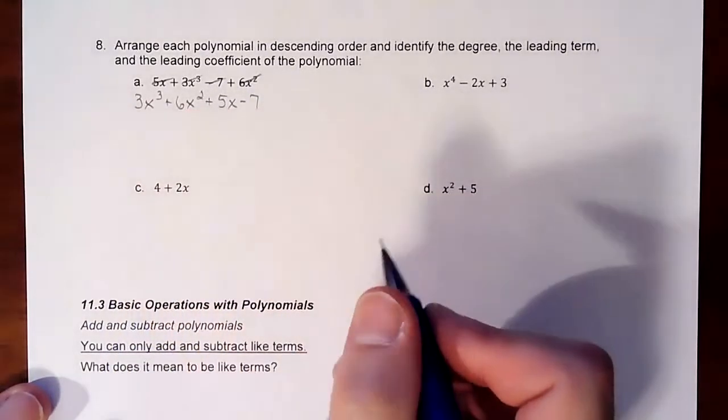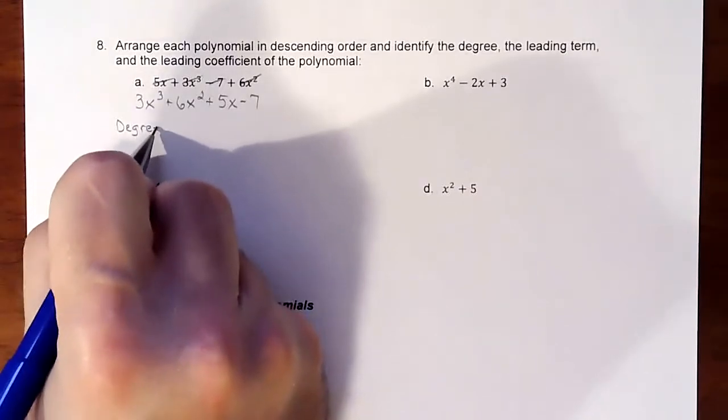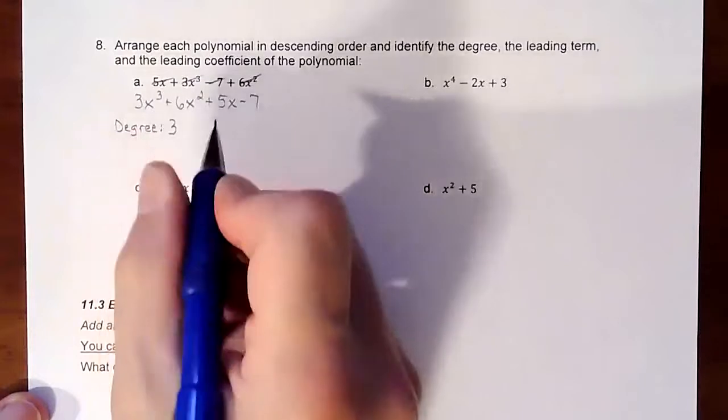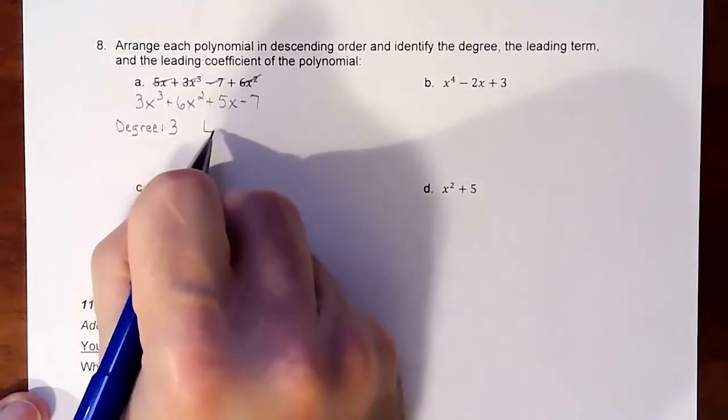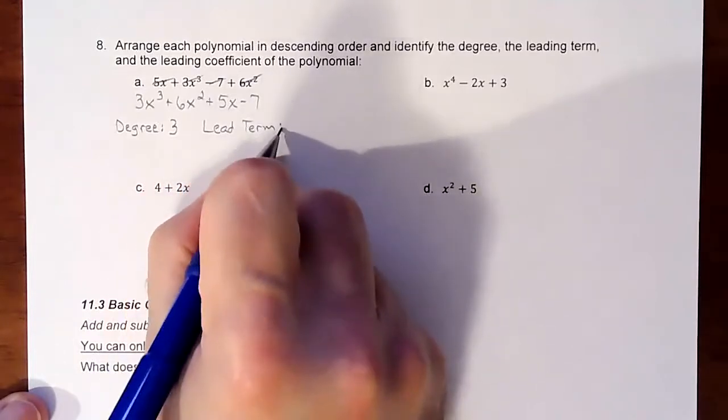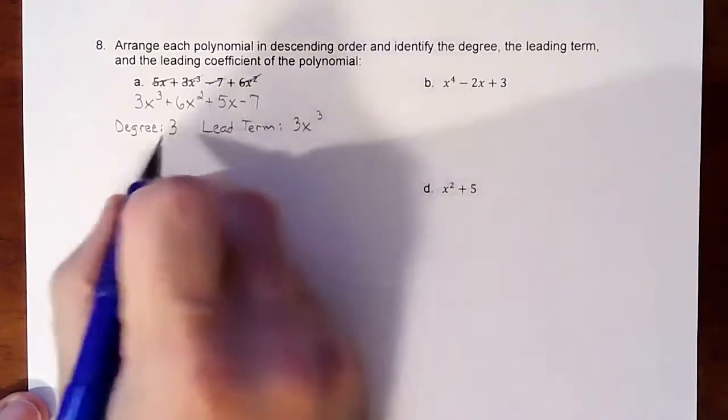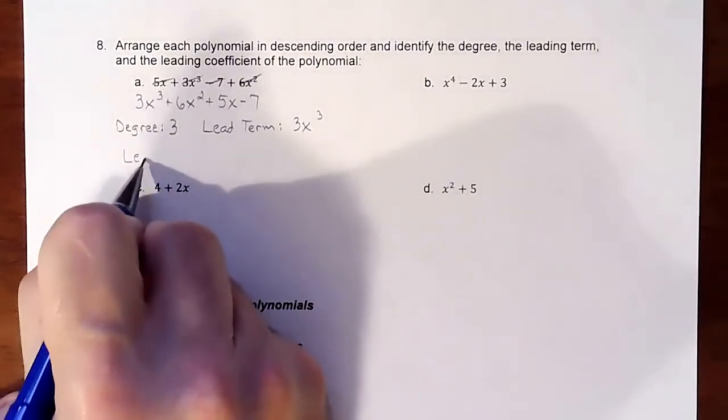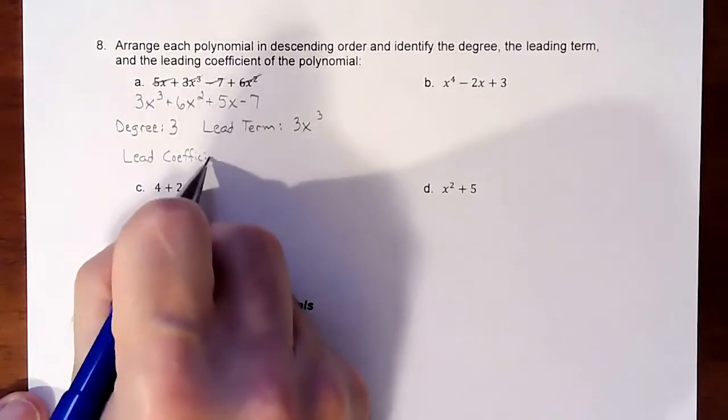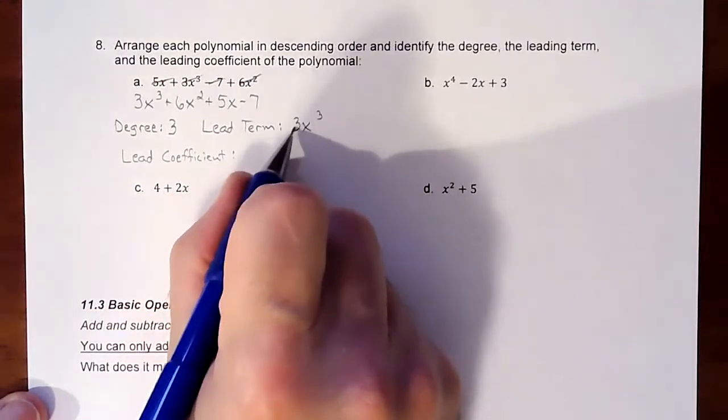Okay, so I got all my pieces. So the degree on this is 3. Okay, highest power is 3. The leading term is this whole 3x to the third, and then our leading coefficient is just the number in front. So that's the leading coefficient.